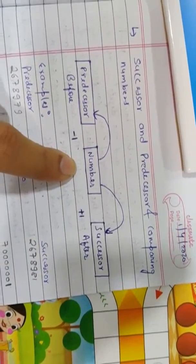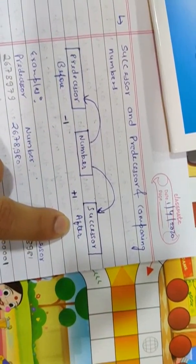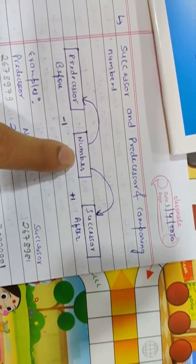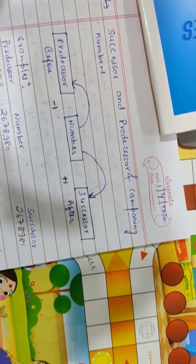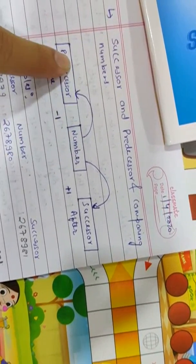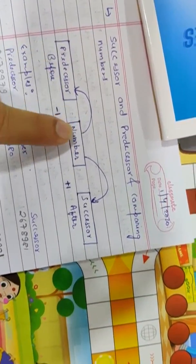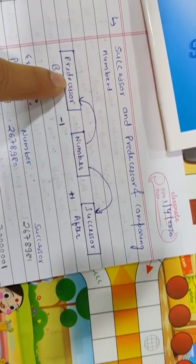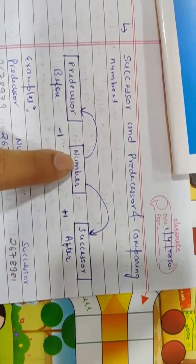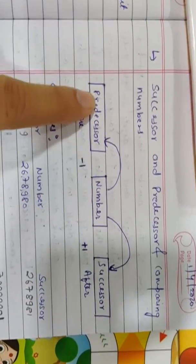Suppose I give you 1, so the next number will be 2, which would be the successor of the given number. If I tell you about 5, so what will be the predecessor? Just minus 1 — that means before the number. So 5 minus 1 would be 4. So this is predecessor and this is successor. Successor means after the number, predecessor means before the number.